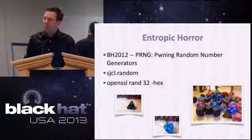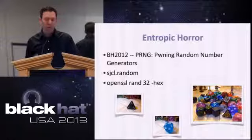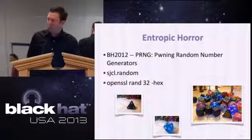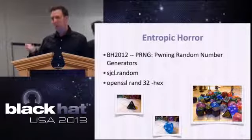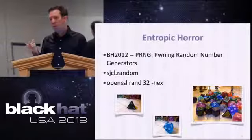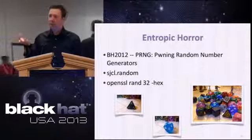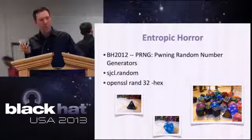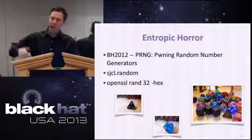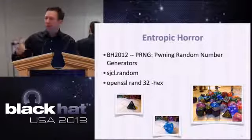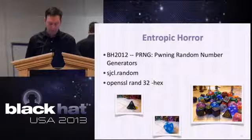Don't bother with things like Mersenne Twister. Even though it has a nice 2^19,000-whatever period, it still has a state. If that state gets exposed and compromised, an attacker can basically replay and reuse it — so it's still not cryptographically secure.